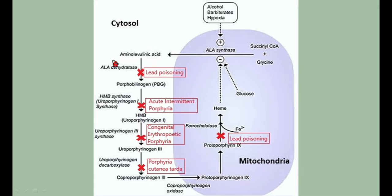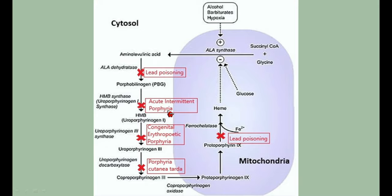ALA dehydratase is very sensitive to lead, so in lead poisoning this enzyme is impaired, heme synthesis stops at this stage, aminolevulinic acid accumulates, and the patient develops hypoxia due to decreased hemoglobin. After porphobilinogen synthesis, uroporphyrinogen 1 synthase converts PBG to uroporphyrinogen 1. Deficiency of uroporphyrinogen 1 synthase causes acute intermittent porphyria.